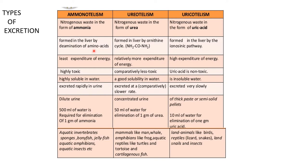Ammonia is formed in the liver by deamination of amino acids. Urea is formed in the liver by the ornithine cycle. Uric acid is formed in the liver by the inso pathway. There is least expenditure of energy in aminotelism, relatively more in urotelism, and high energy is required in uricotelism. Ammonia is highly toxic, urea is comparatively less toxic, and uric acid is non-toxic. Ammonia is highly soluble in water, urea has good solubility, and uric acid is insoluble in water. Ammonia is excreted rapidly in urine, urea at a slower rate, and uric acid very slowly.